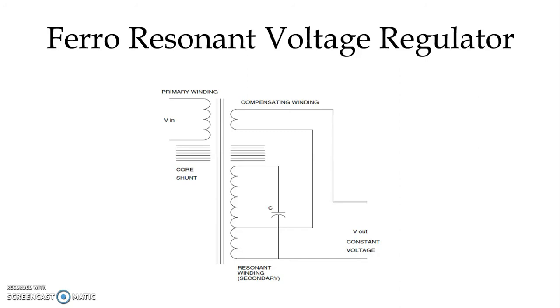They operate on the principle that in a transformer when the secondary magnetic circuit is operating in the saturation region, the secondary winding is decoupled from the primary and therefore is not sensitive to voltage changes in the primary. The secondary winding has a capacitor connected across its terminal that forms a parallel resonance circuit with the inductance of the secondary winding. Large magnetic fields are created in the magnetic core surrounding the secondary windings, thereby decoupling the secondary winding from the primary.